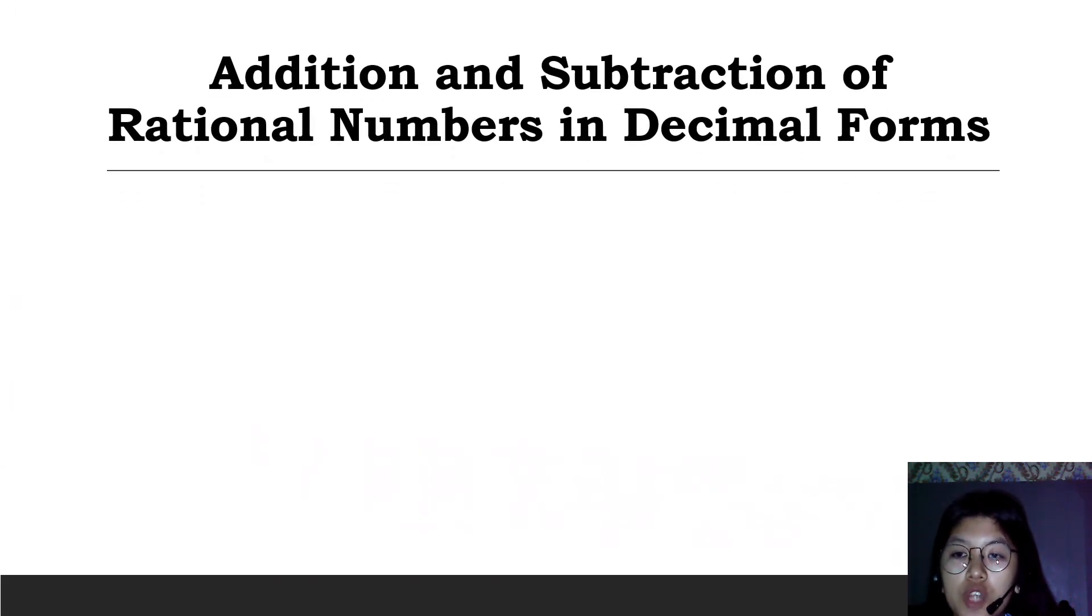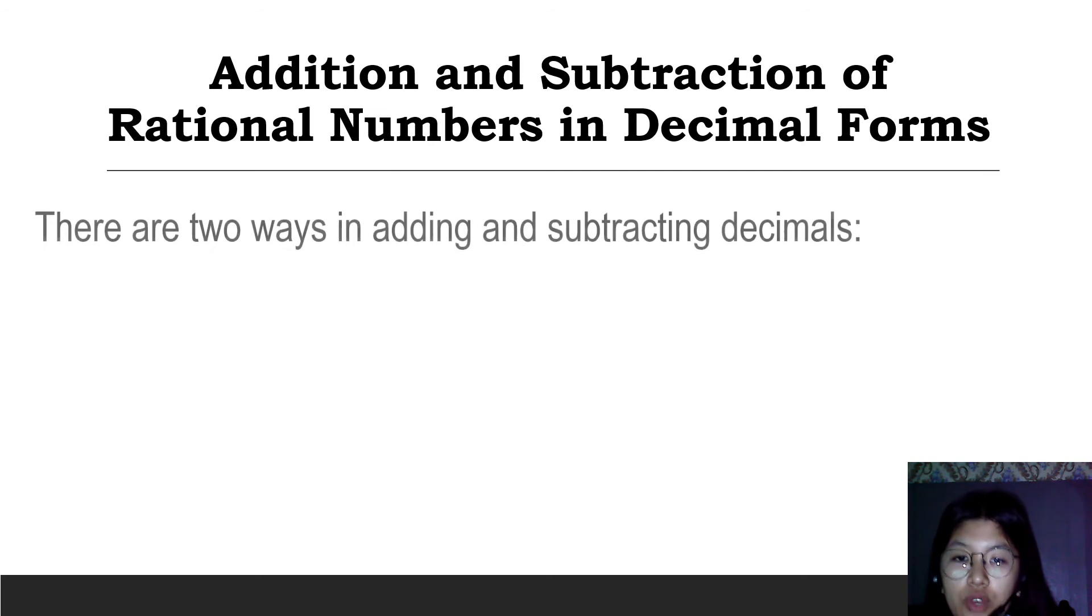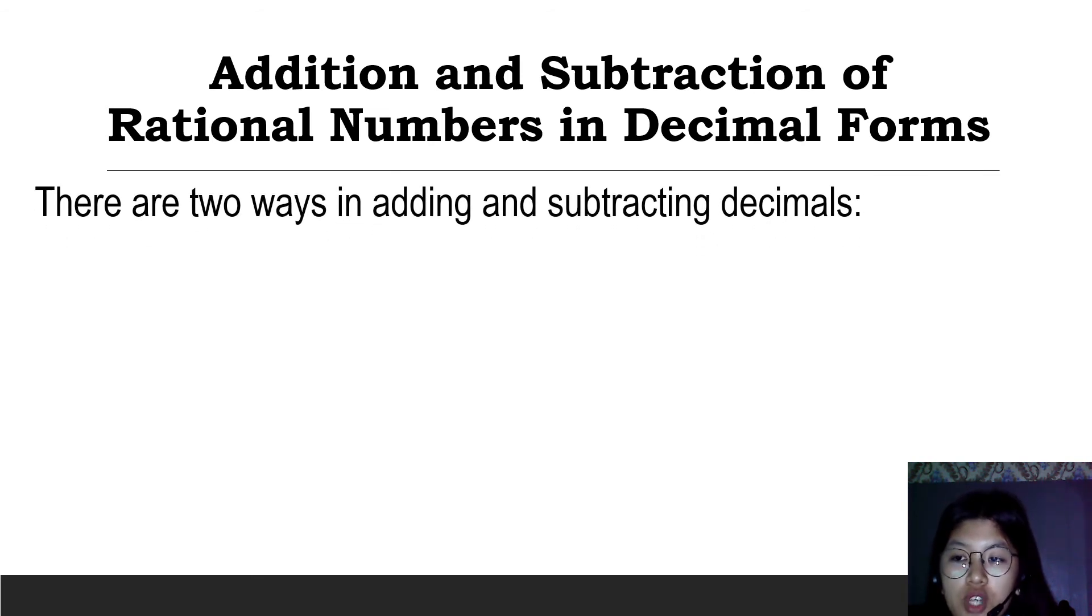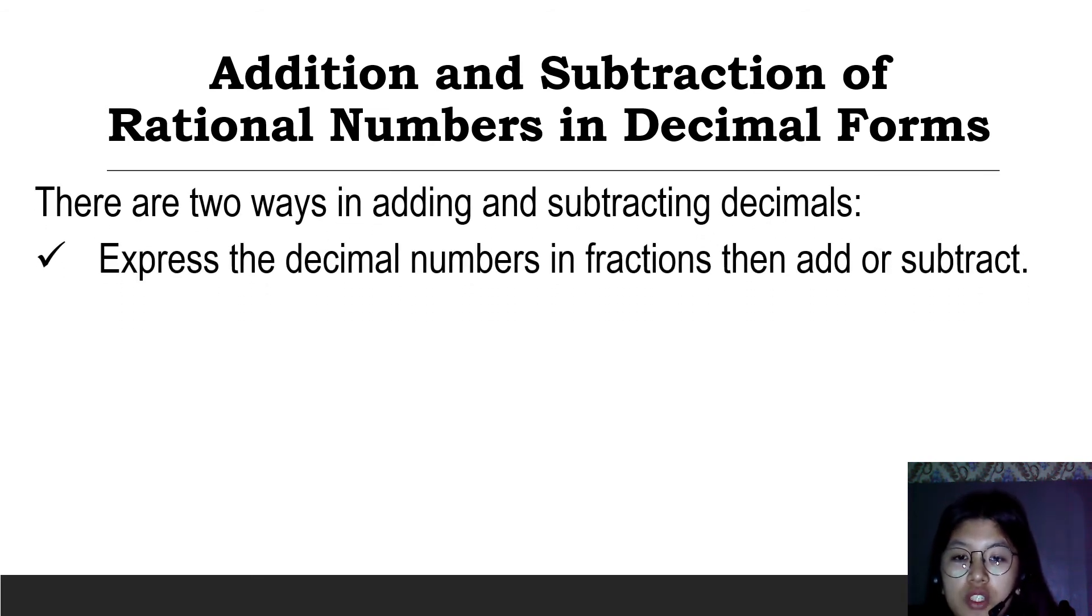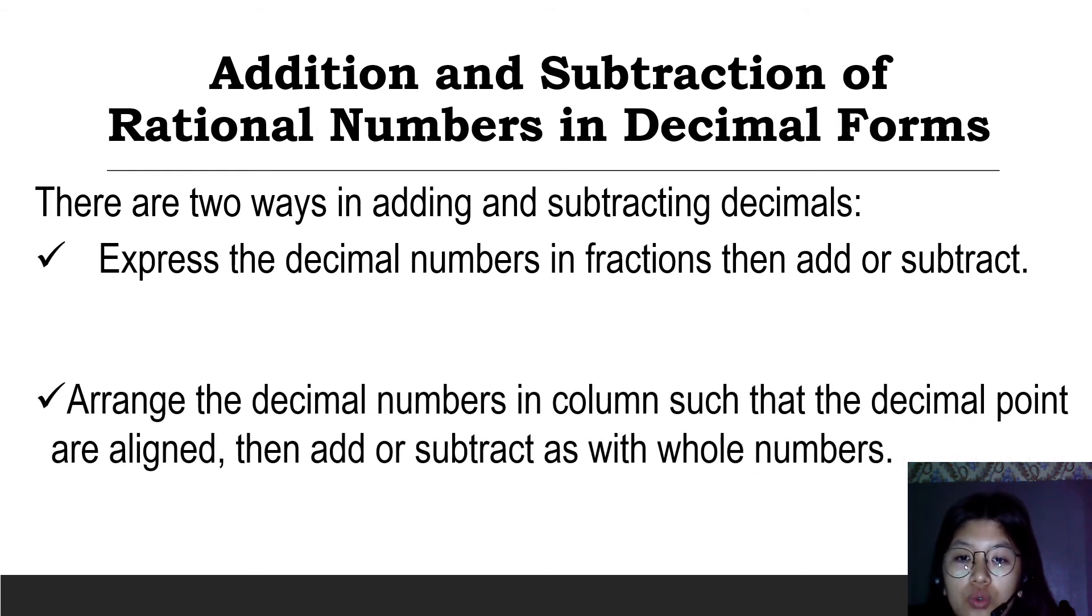Addition and subtraction of rational numbers in decimal forms. There are two ways in adding and subtracting decimals. First, express the decimal numbers in fractions, then add or subtract. Second, arrange the decimal numbers in columns such that the decimal points are aligned, then add or subtract as with whole numbers.